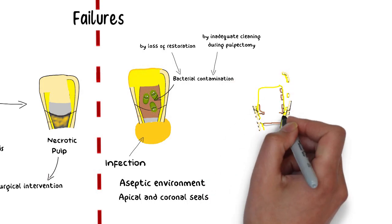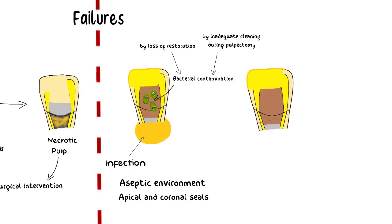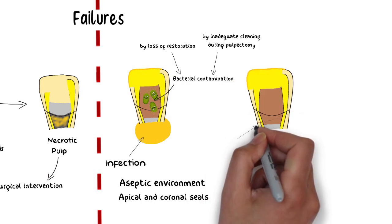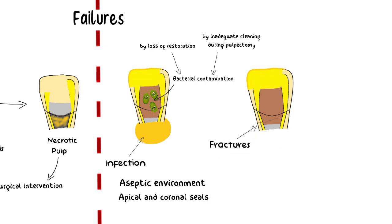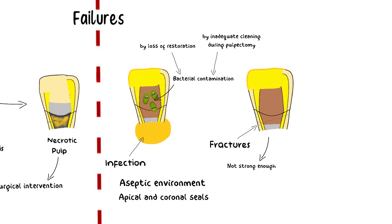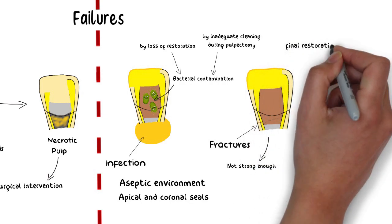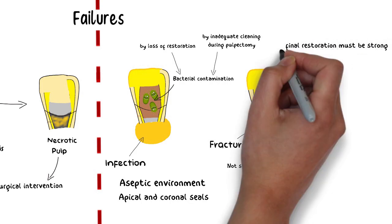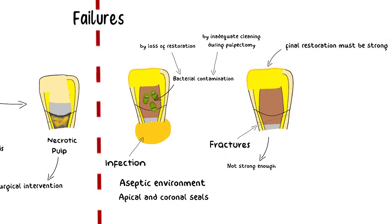Another cause of failure of Apexification is root fractures. The root of the tooth is not fully developed yet and the tooth is not reinforced enough to withstand intense masticatory loads. Hence, the final restorations should be made very strong and capable of resisting high masticatory loads during the life of the tooth.